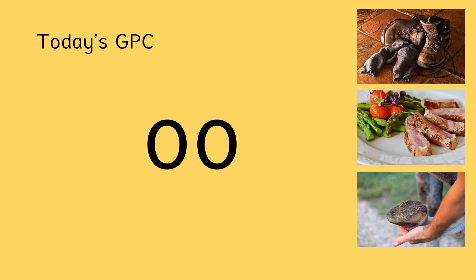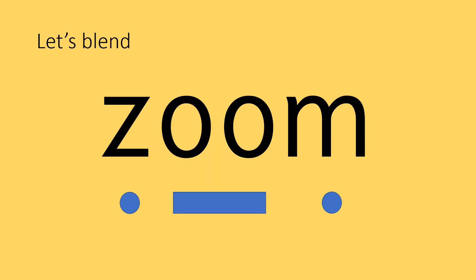So in today's session, if we see that grapheme, we're going to say the OO phoneme. Let's put it straight into some practice — let's practice our blending. I'll do it first, then you can have a go. If you don't need my help, just pause the video and have a go at blending on your own. OK, we've got Z, OO, M — Zoom. Z, OO, M — Zoom. We will zoom through our work today!